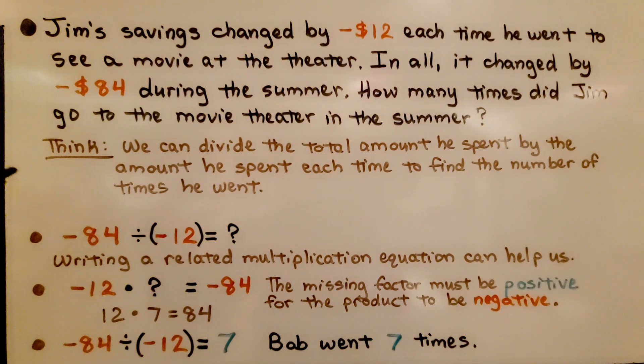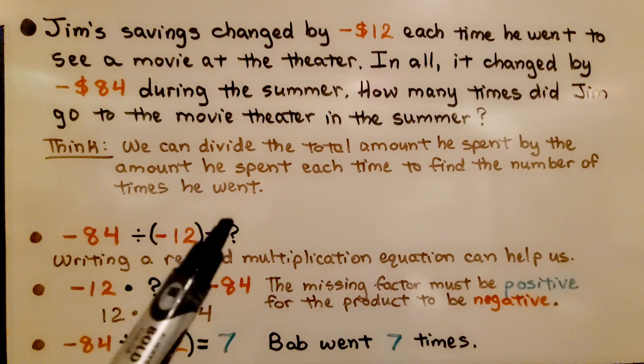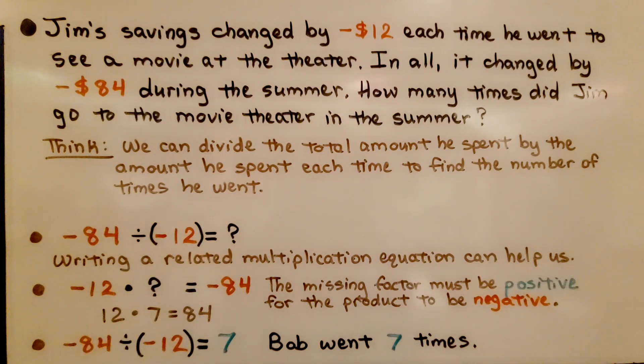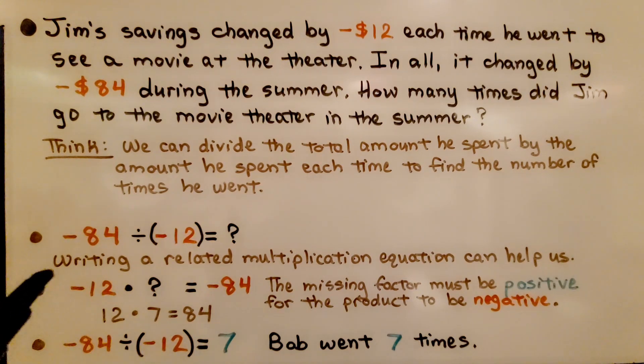We think we can divide the total amount he spent by the amount he spent each time to find the number of times he went. Negative 84 divided by negative 12. Whatever that quotient is, is going to tell us how many times he went to the movies. We can do a related multiplication equation to help us.